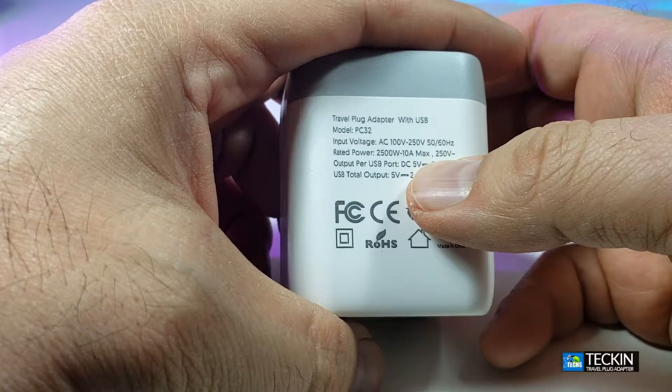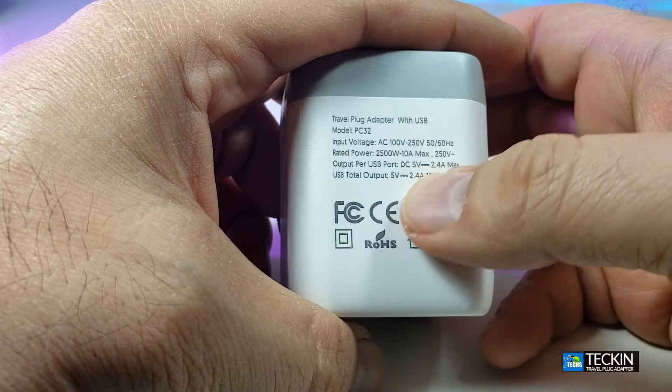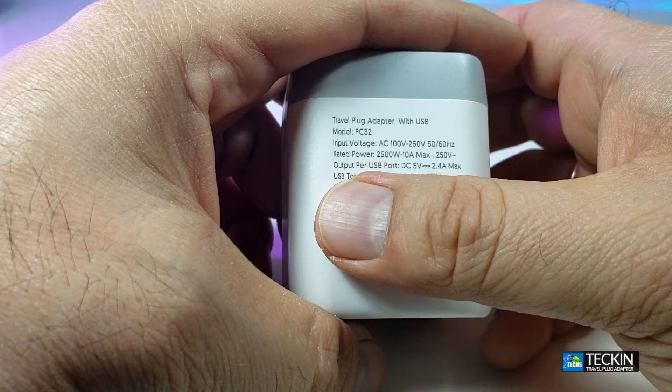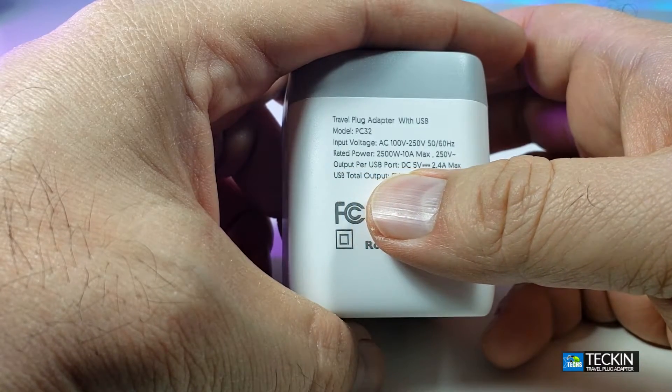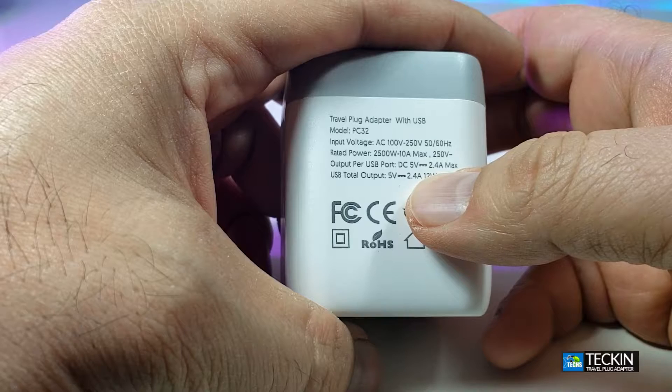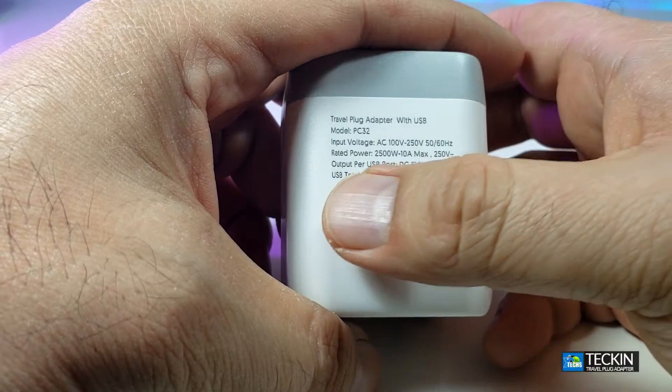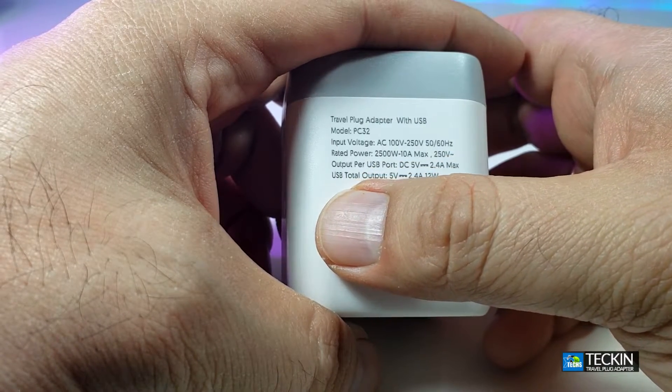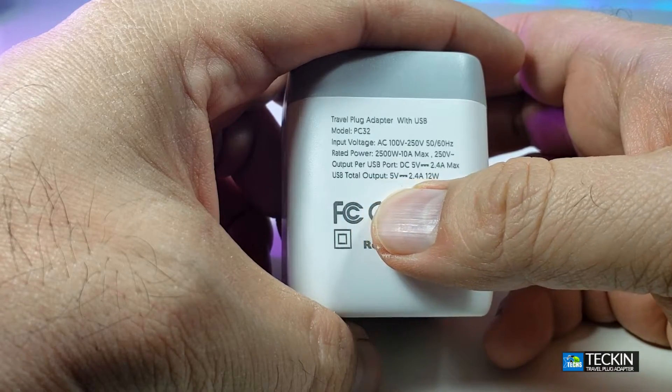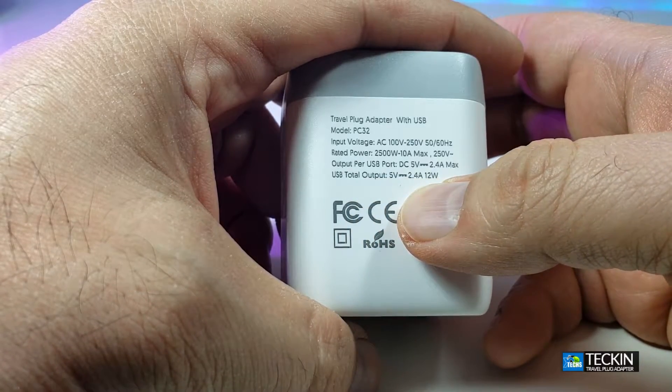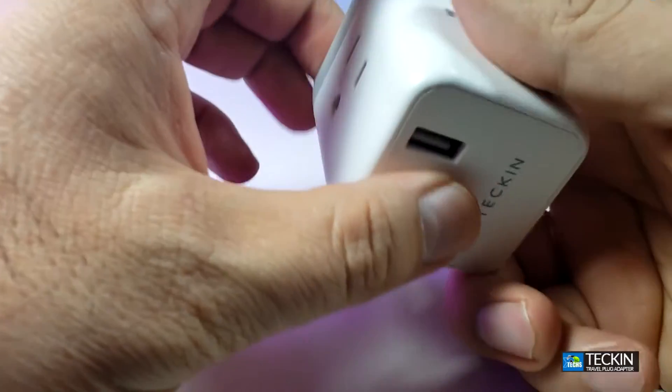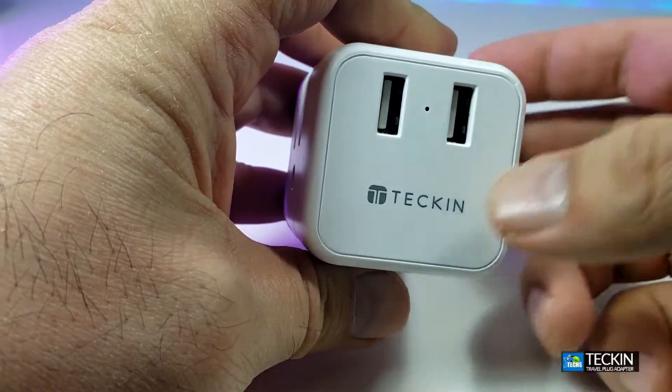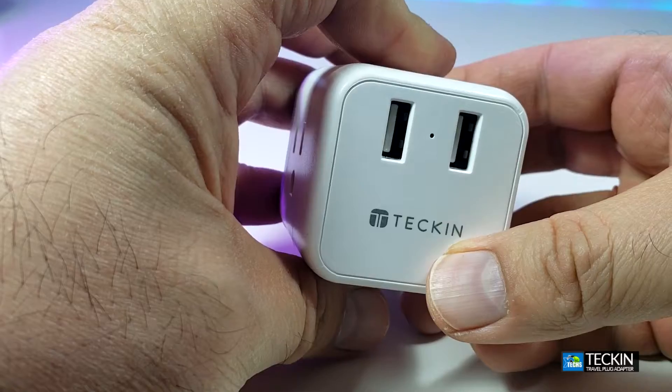But again, if you look, it also says that 250 volt minus. Look in the bottom part of it, it says output on a USB port is 5 volt, 2 amps, 4a maximum. And then going in the bottom, it also says that the USB output on this is 5 volt, 2 amps, which is 12 watt. Now that's saying that this will be able to fast charge your phones, which is a perfect thing.